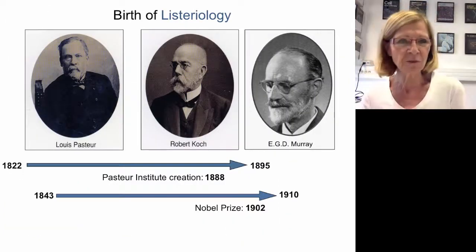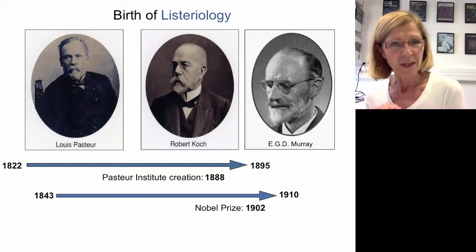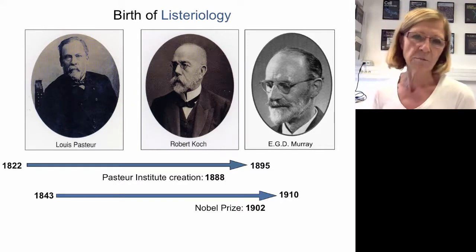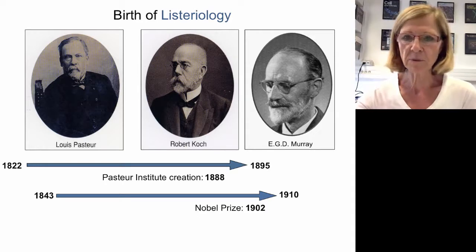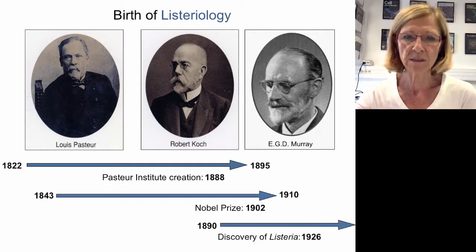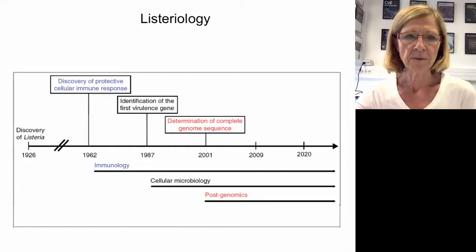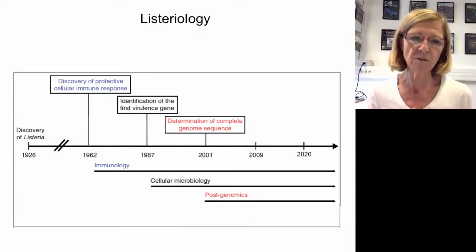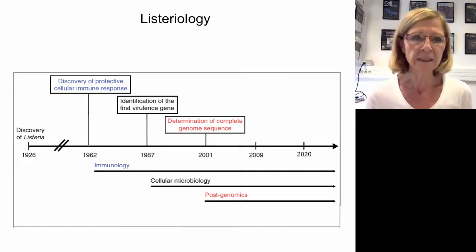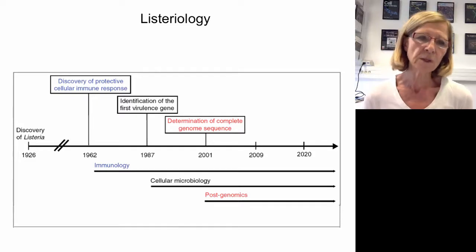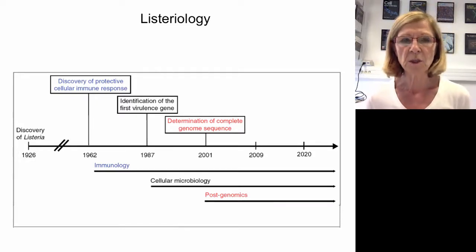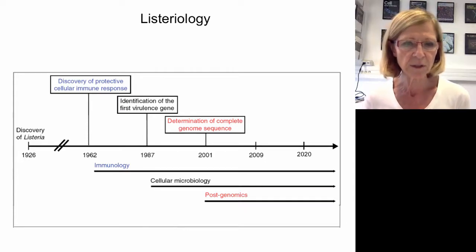Listeria was not discovered by Louis Pasteur or his competitor Robert Koch — it was discovered by Murray in Cambridge, England. In Listeriology, there are important dates. The first is in the early 60s when Mackaness discovered that protection against Listeria and recovery from infection is not due to an antibody response but to a T-cell response. Since then, Listeria has been used as a model in immunology.